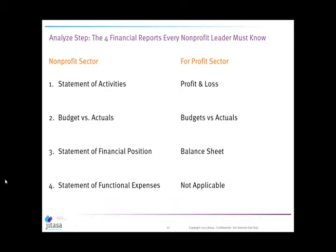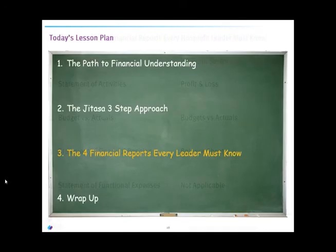To wrap up the analyze step, here are four financial reports every nonprofit leader — whether you're an ED, CFO, or board member — should know. First, the statement of activities, which is like a profit and loss in the for-profit sector. Second, budget versus actual, which is another cut of the statement of activities. Third, the statement of financial position, or balance sheet. Fourth — unique to the nonprofit world — the statement of functional expenses, where you look at expenses by program, admin, and fundraising. There is no equivalent in the for-profit sector. We'll spend the last portion of the webinar going into each report at a high level and then show you through a dashboard how to look at that information in a new way.